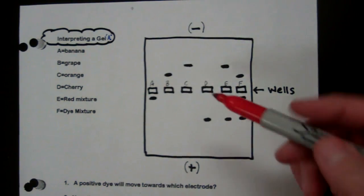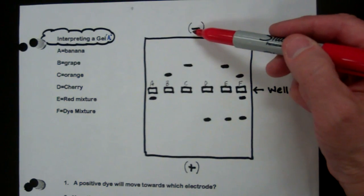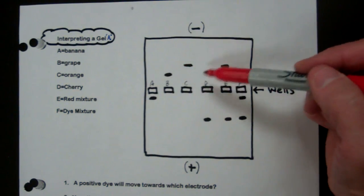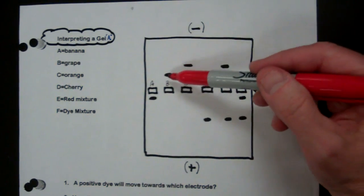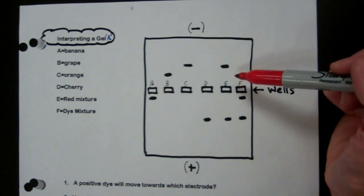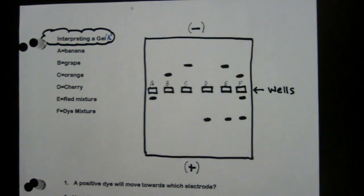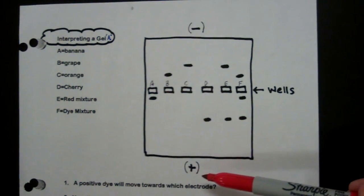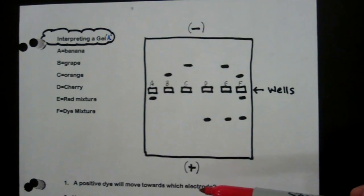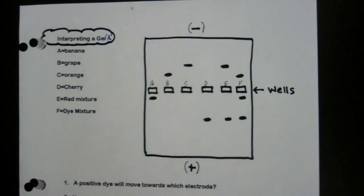So any dyes that migrated towards the negative, that means that these dyes that moved from the well to the negative side, this one, this one, this one, and this one, all of those must have a positive charge. And the dyes that migrated from the wells towards the positive electrode, those all must have a negative charge.